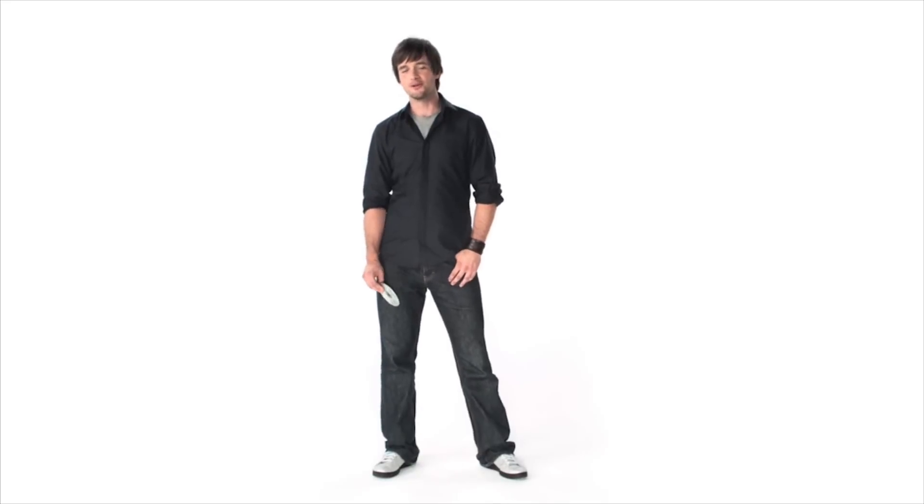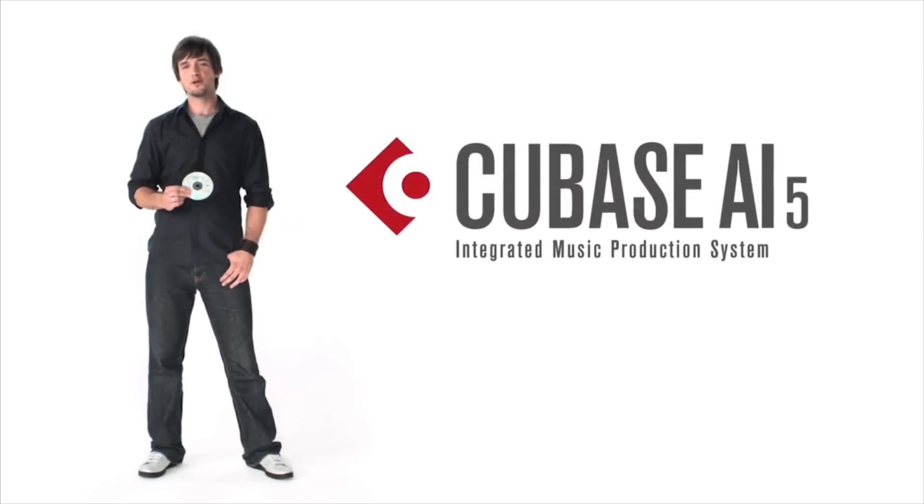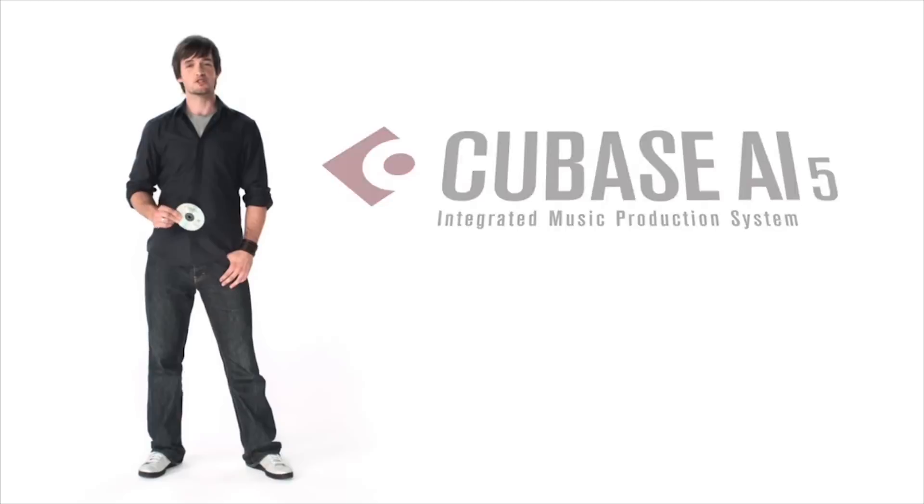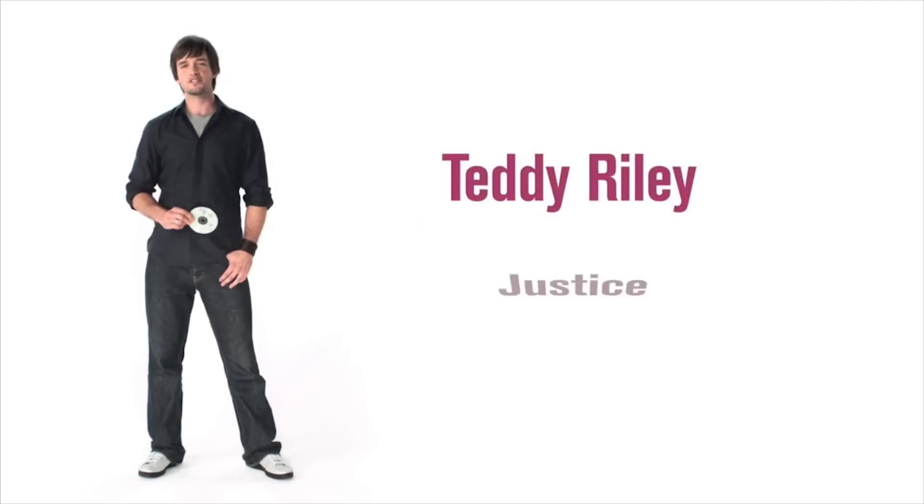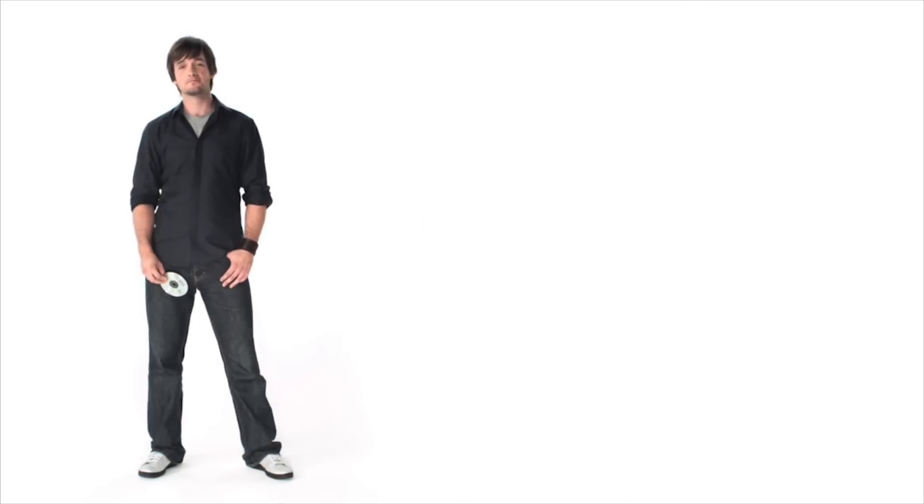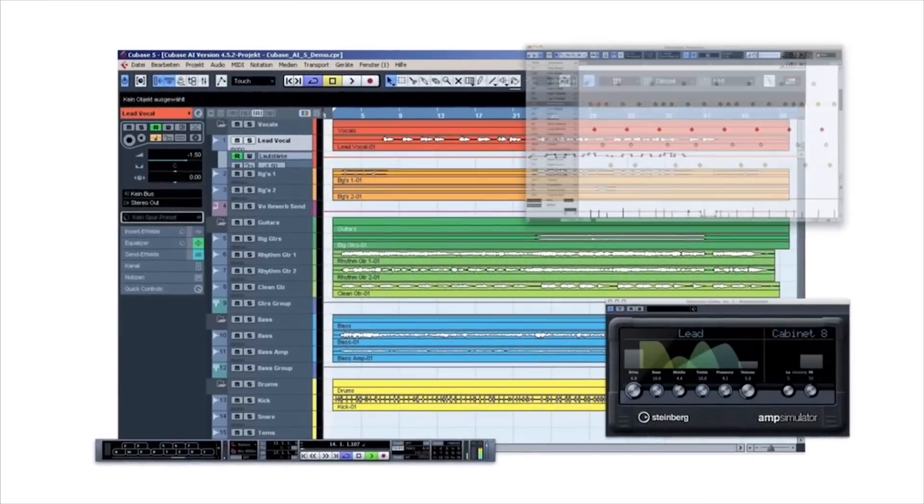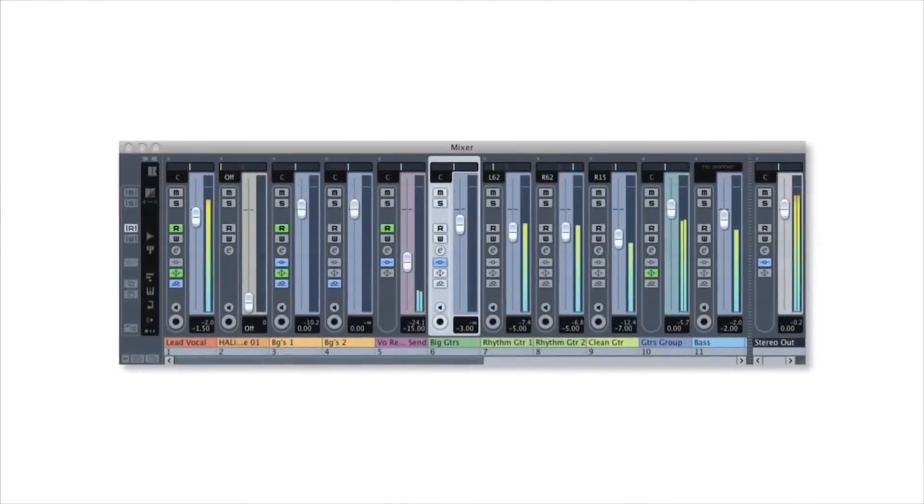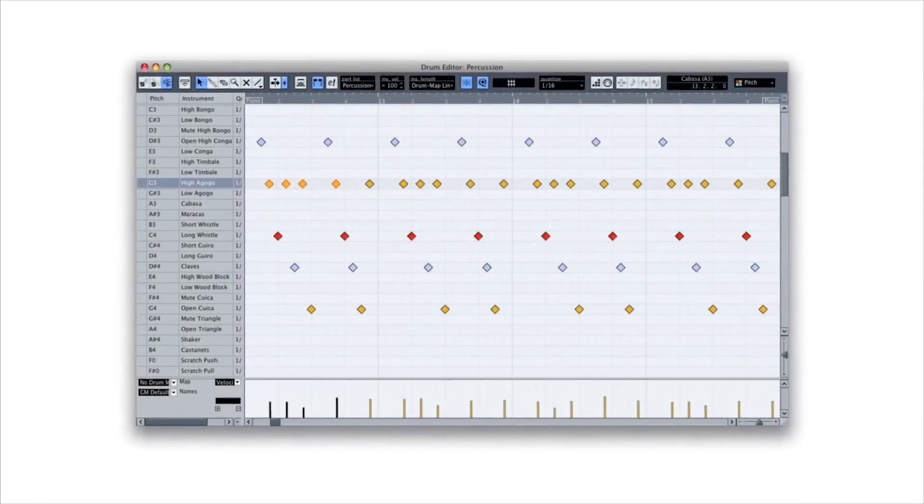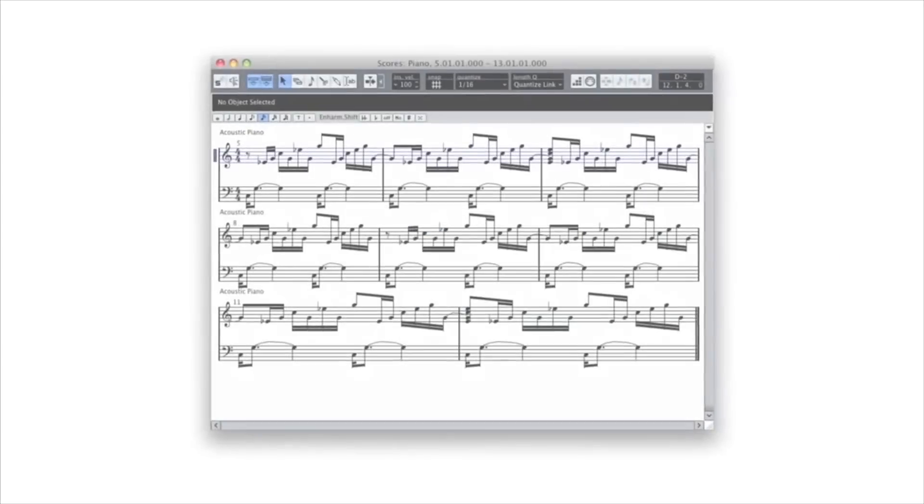And it goes on and on. CI2 comes with Cubase AI5, a special version of Steinberg's world-famous production software used by countless professionals worldwide. Cubase AI5 lets you scale up your song ideas into full productions with a virtual mixer, drum editing, on-board effects and instruments and even a score editor.